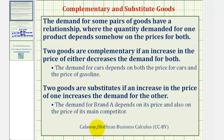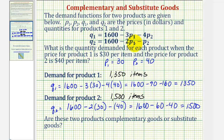Going back to our example, looking at the demand functions, notice how both of them have minus P sub one terms and minus P sub two terms. This means if P sub one or P sub two increases, both demands would decrease, and therefore these two products are complementary goods.